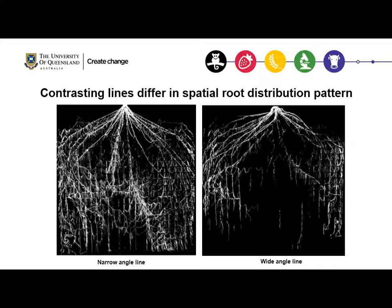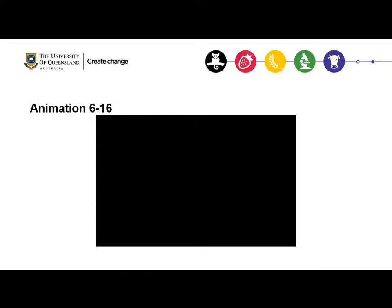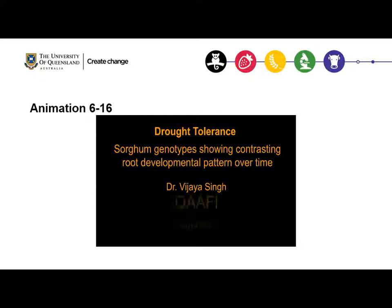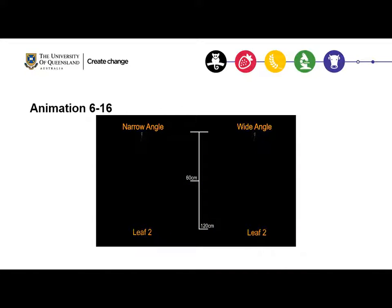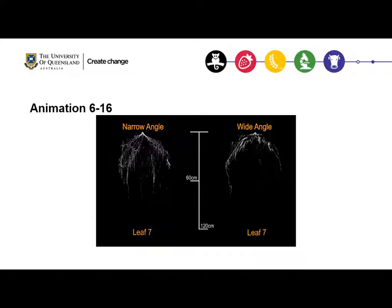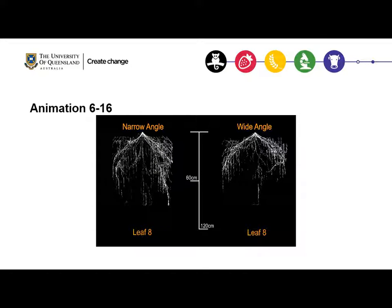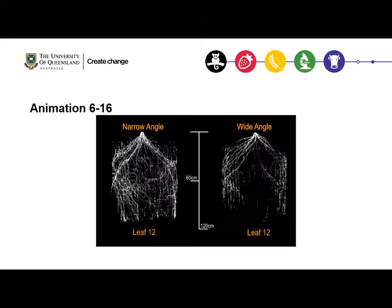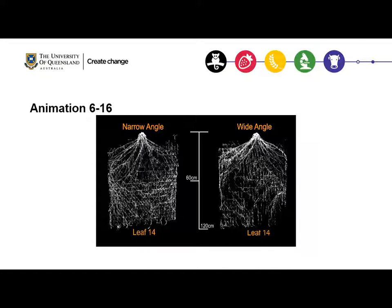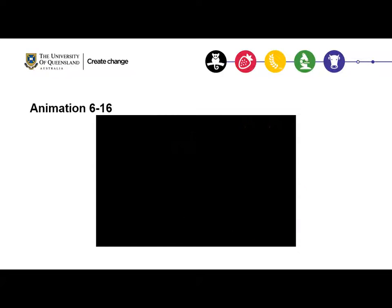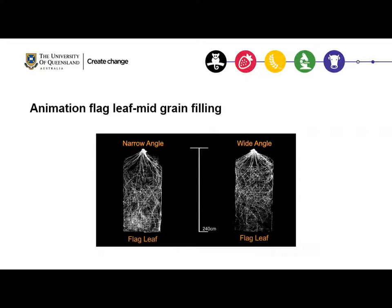I've combined all these photographs into an animation showing the difference in root development between the two lines at every harvest. From the sixth leaf stage, you can see the narrow angle line on your left has maintained that steeper root distribution at every harvest. This shows root development from sixth leaf to sixteenth leaf stage, and the next slide shows differences from flag leaf stage to mid grain-filling stage.